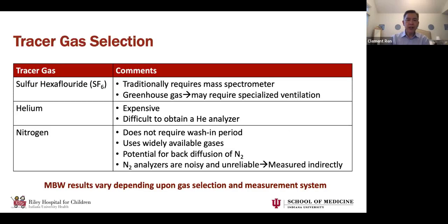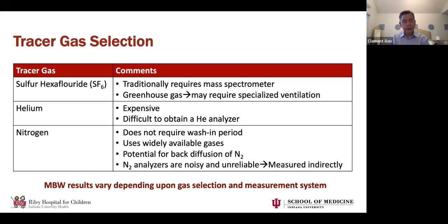SF6 was widely used, especially early on in the early 2000s when MBW was kind of resurrected to calculate LCI. Traditionally it required a mass spectrometer, which isn't practical clinically and even in research labs is expensive and finicky. There are now other ways via infrared, so that's less of a drawback. However, SF6 is a greenhouse gas, so in certain situations you may need to reconfigure ventilation in your PFT lab to recapture it. In general, especially in the United States, not many people are using SF6.